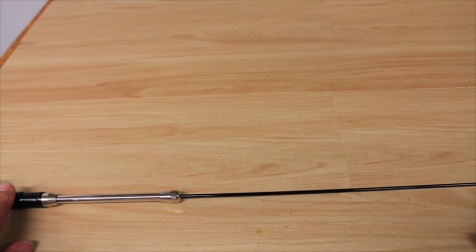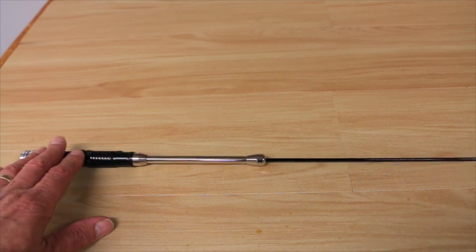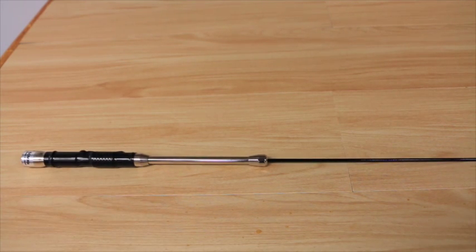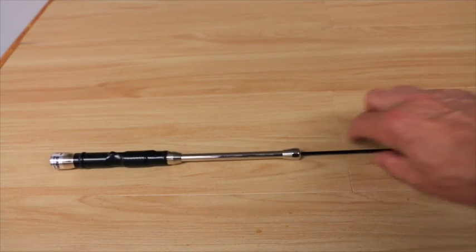Antenna length assembled is probably just over a meter long and this is actually a 10 meter model. So that's your Diamond antenna.